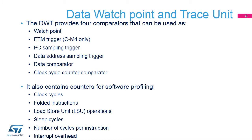A data watchpoint, or DWT comparator, compares one of the following with the value held in its DWT comp register: a data address, an instruction address, a data value, or the cycle count value (for comparator 0 only). For address matching, the comparator can use a mask, so it can match a range of addresses.